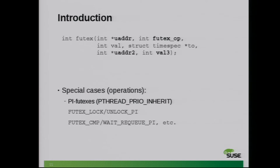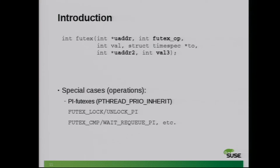In that time, a third thread with medium priority preempts the one with lower priority. So you have the scenario where a higher priority task is waiting for the lower priority one to release the lock, but there's no forward progress. Priority inheritance basically lets you boost the priority of the task holding the lock to match the waiter with the highest priority.